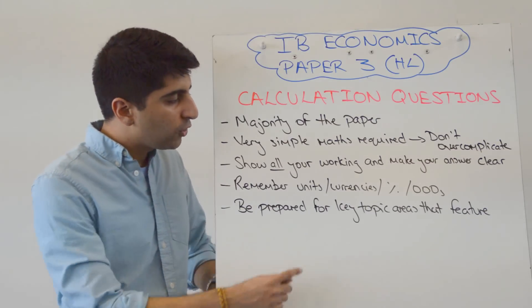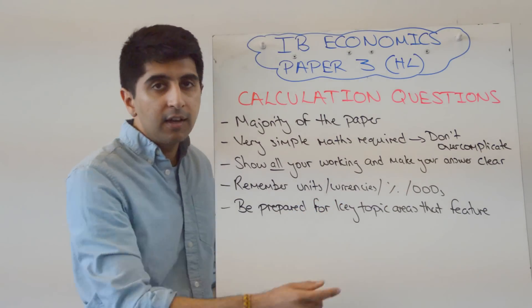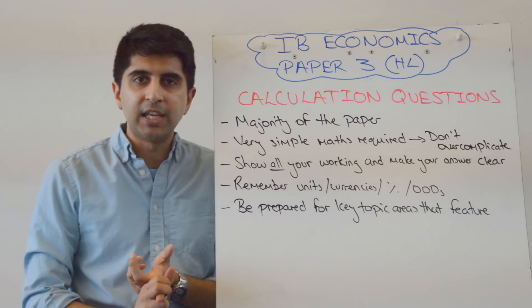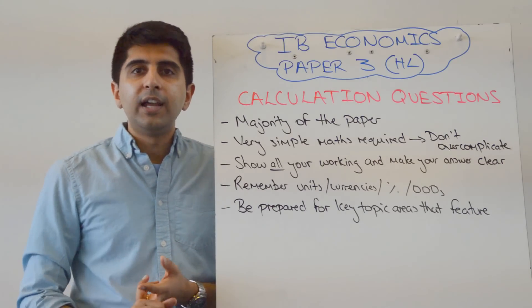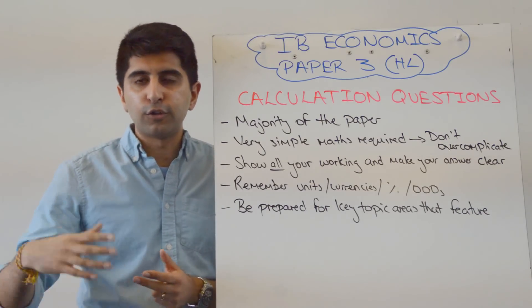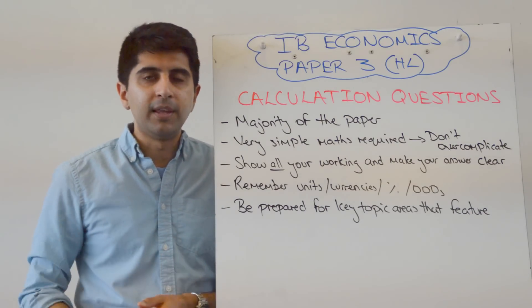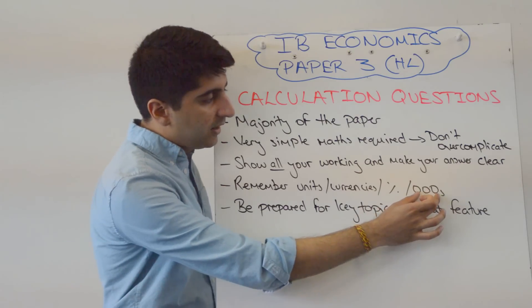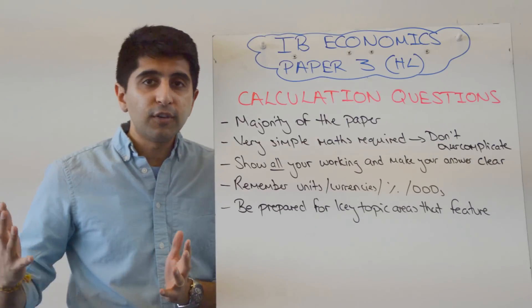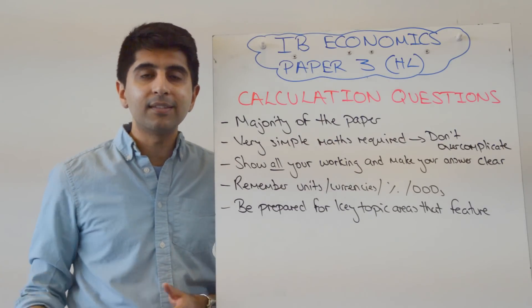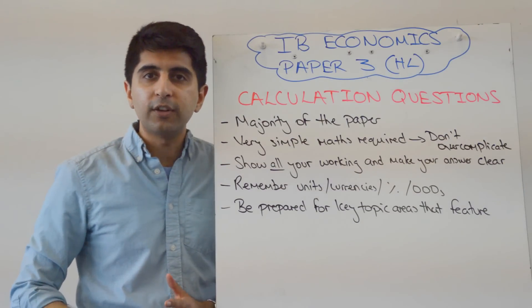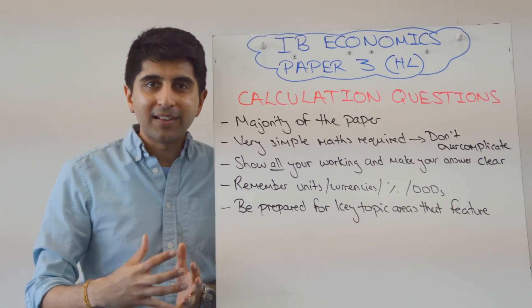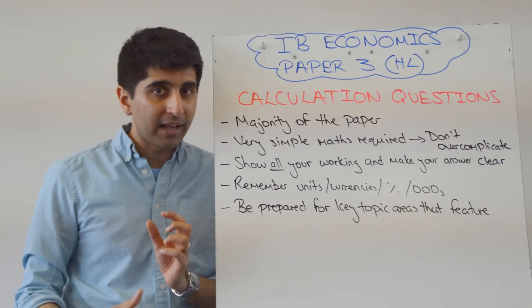Remember your units, your currencies, your percent. That's important, right? Common mistakes there. People forget kilograms. They forget that it's in US dollars or Australian dollars or something, Indian rupees. They forget that it's a percent. They need to write it in. They forget that the answer is actually supposed to be in hundreds of thousands or millions or billions because the question is scaled down. And they forget to change their answer to billions or millions. Don't be that student.